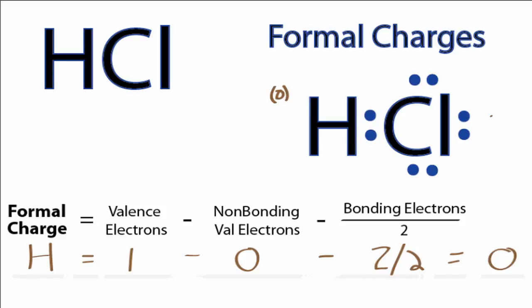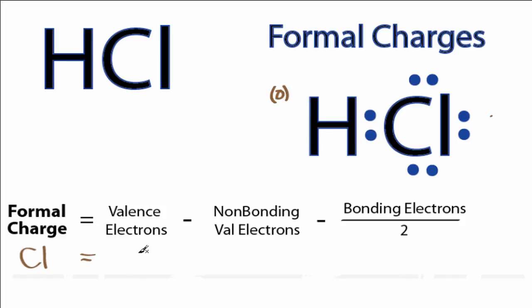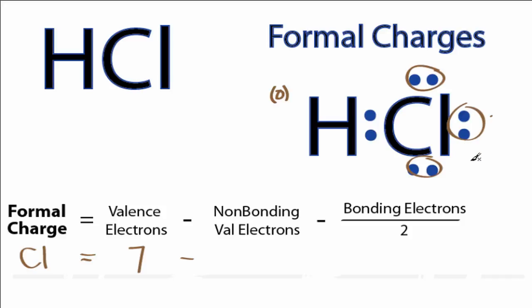Next let's do the chlorine atom. On the periodic table, chlorine is in group 17, sometimes called 7A, so it has seven valence electrons. For non-bonding valence electrons, we have two here, two here, and two here — those are not involved in chemical bonds, so we have a total of six non-bonding electrons.